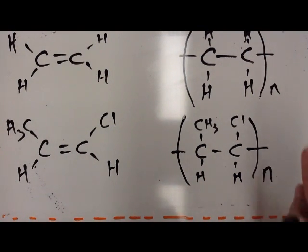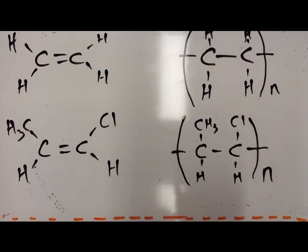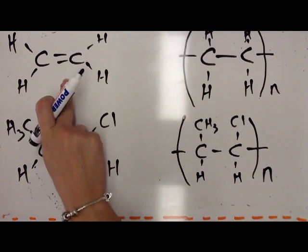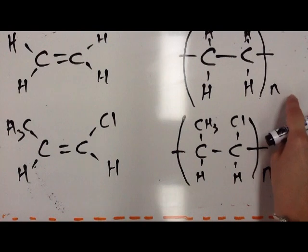If you want to know the name of the polymer from the monomer, you just put the word poly in front. So this is ethene and this is polyethene. Thank you very much.